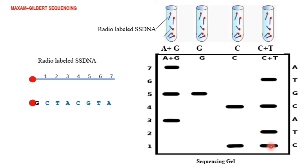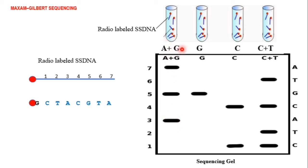Next, looking above that band, we can see another band that is observed in the C plus T tube. We check whether there is any band at the same position in the C tube — there is no band, so we can confirm it is a T. Then above that, there is a band in the A plus G reaction tube. We check the G tube and there is no band in G, so we can say this is an A.